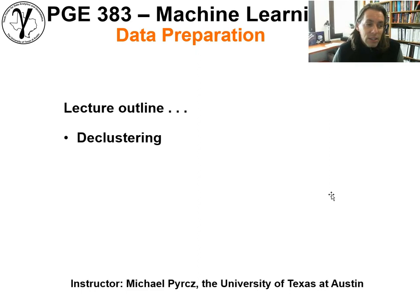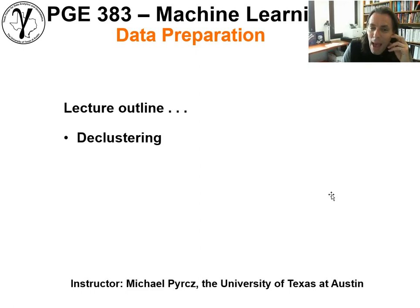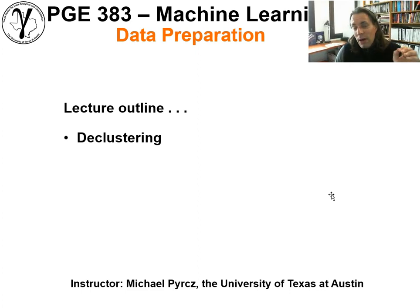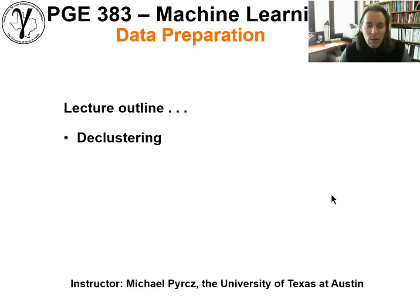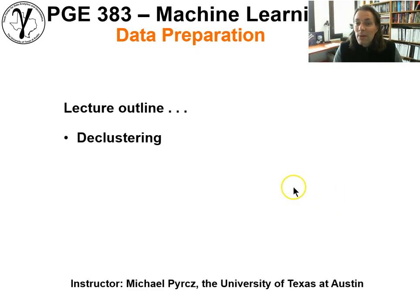So let's finish this lecture. We've introduced the general issues around data preparation, representation, and basic map-based and region-based approaches to address spatial bias — all critical for data preparation in machine learning. We'll cover declustering and quantification of uncertainty in the next two recorded lectures. I hope this was helpful. I'm Michael Pyrcz, associate professor at the University of Texas at Austin — the Geostats guy on Twitter, YouTube, and GitHub. All my lectures are recorded and available for anyone interested in data analytics, geostatistics, and machine learning. Take care.